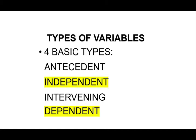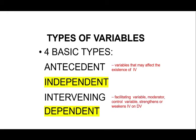There are four basic types of variables. The first one is antecedent, followed by independent, intervening, and dependent variables. Antecedent variables are those that may affect the existence of your independent variable. Intervening variables mediate between independent and dependent variables — these are the variables which may affect the occurrence of the dependent variables depending on how they control the independent variables.